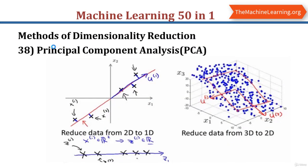Principal component analysis is an unsupervised, non-parametric statistical technique primarily used for dimensionality reduction in machine learning. High dimensionality means the dataset has a large number of features. The primary problem associated with high dimensionality is model overfitting, which reduces the ability to generalize beyond the training set. PCA makes maximum variability in the dataset more visible by rotating the axis. PCA identifies a list of principal axes to describe the underlying dataset before ranking them according to the amount of variance captured by each. PCA uses eigenvectors and eigenvalues.